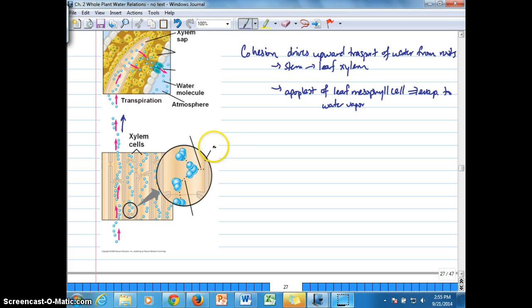Now adhesion, as you can see here in this diagram, is between the water molecule and the wall of the cellulose, and is contributing to that capillary rise.